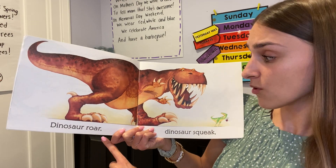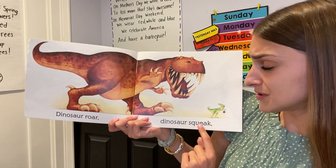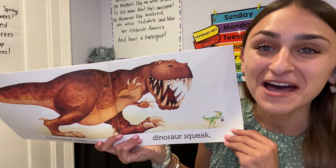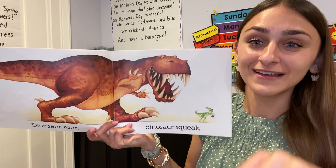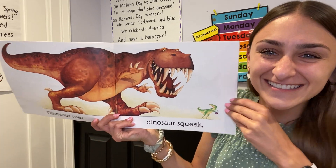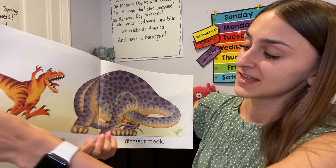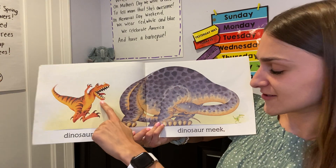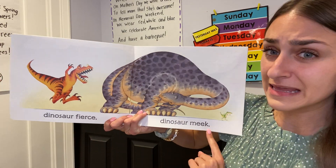Dinosaur Roar. Dinosaur Squeak. What is the opposite of Roar? Squeak. Dinosaur Fierce. Dinosaur Meek.